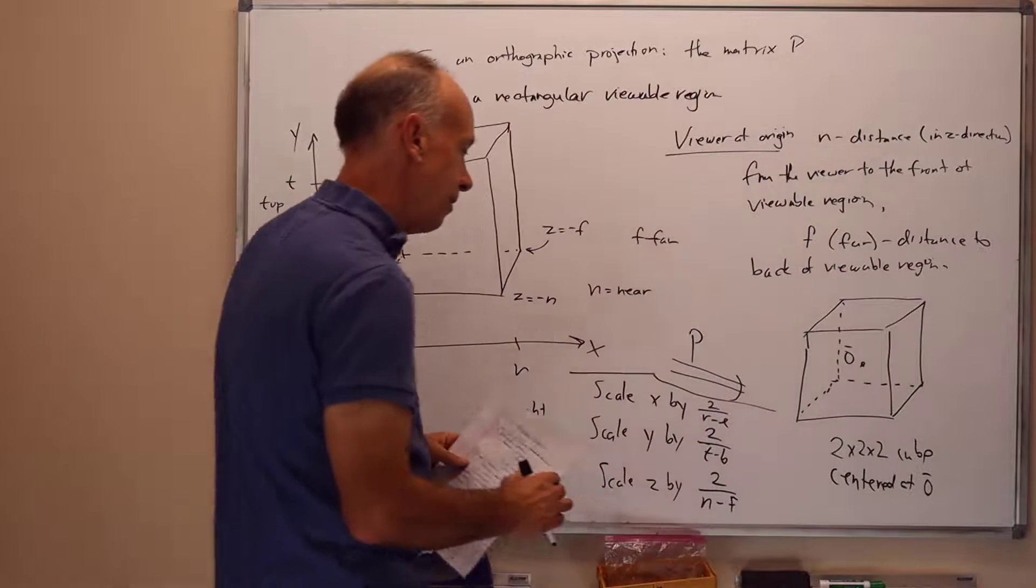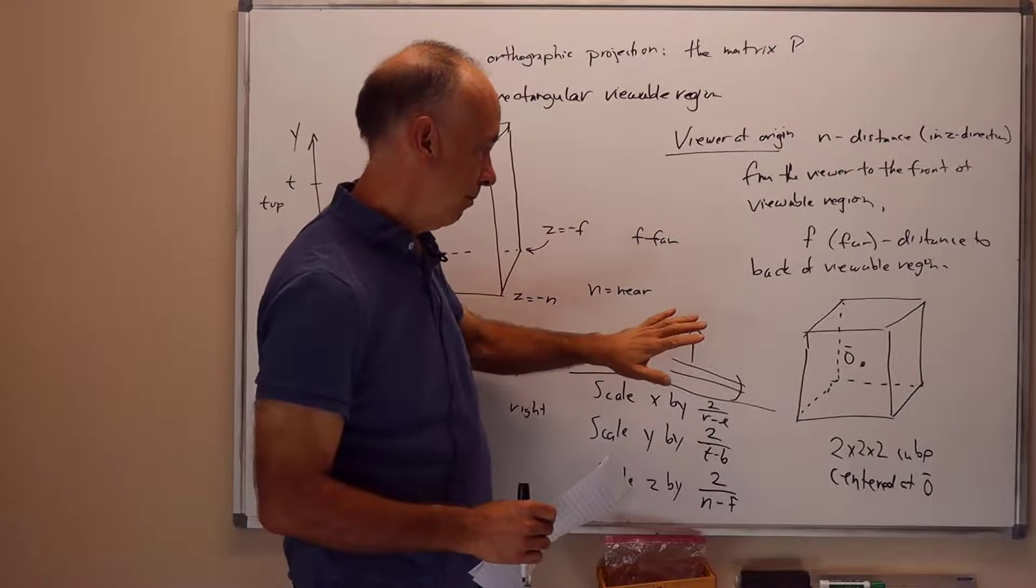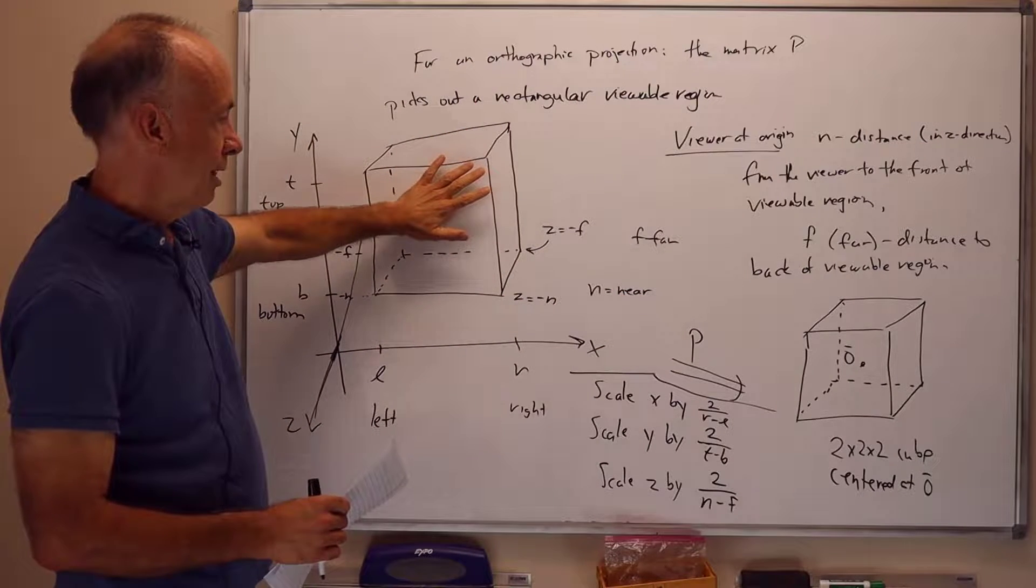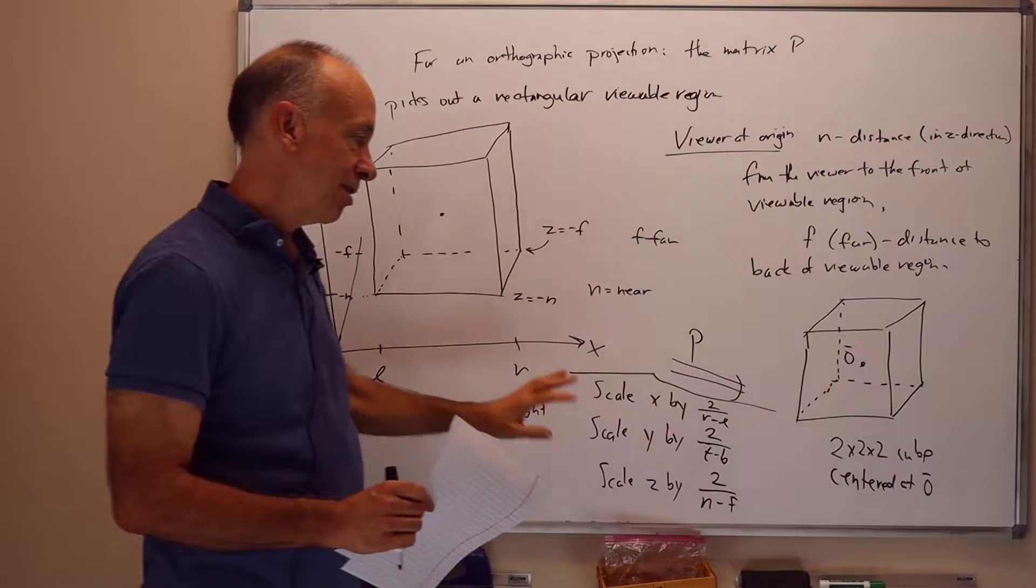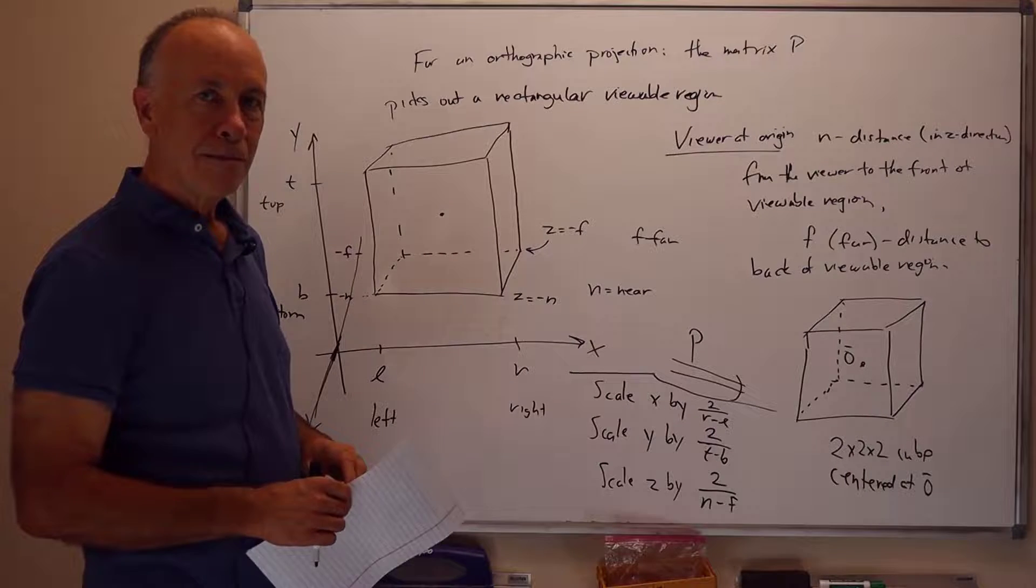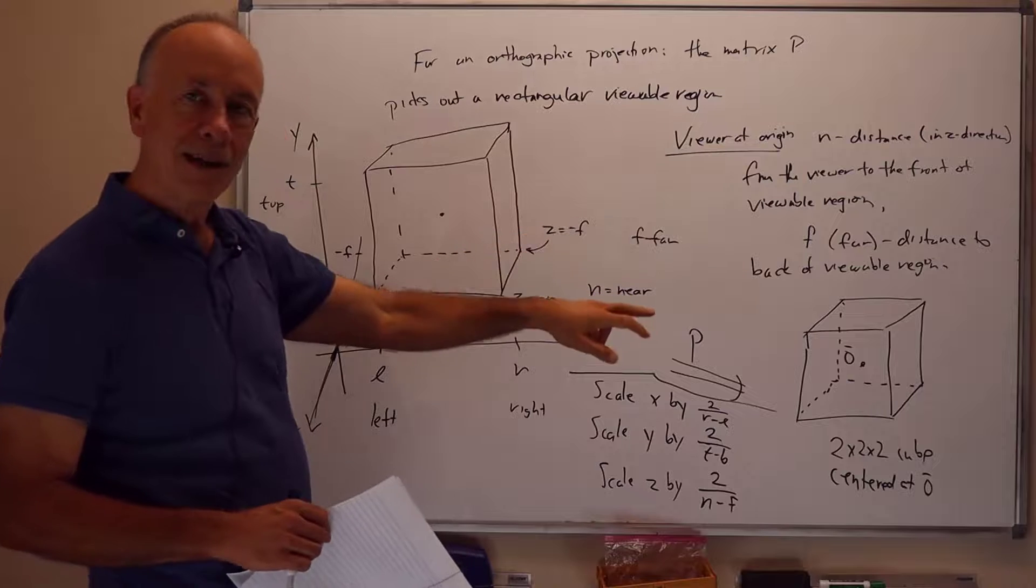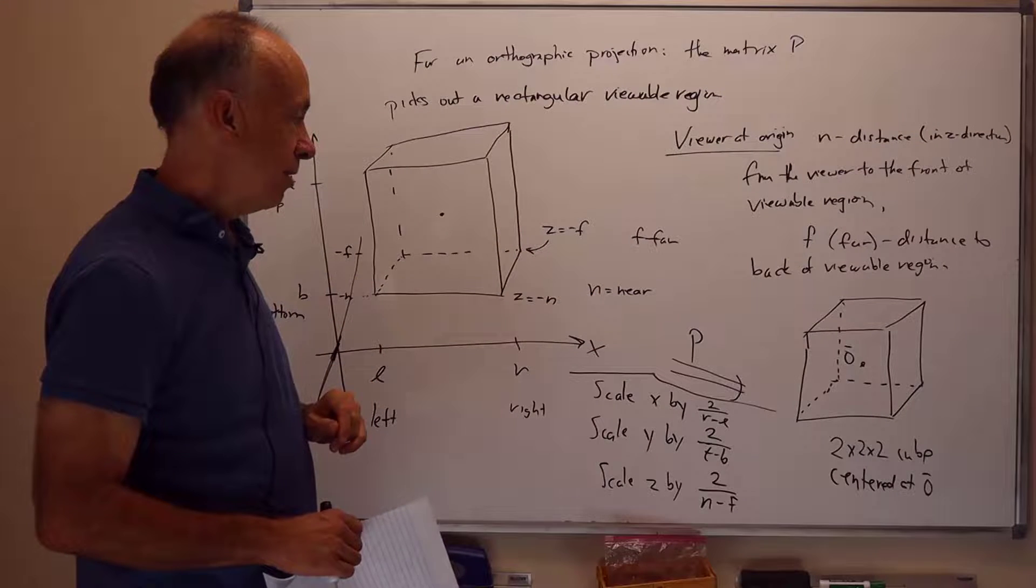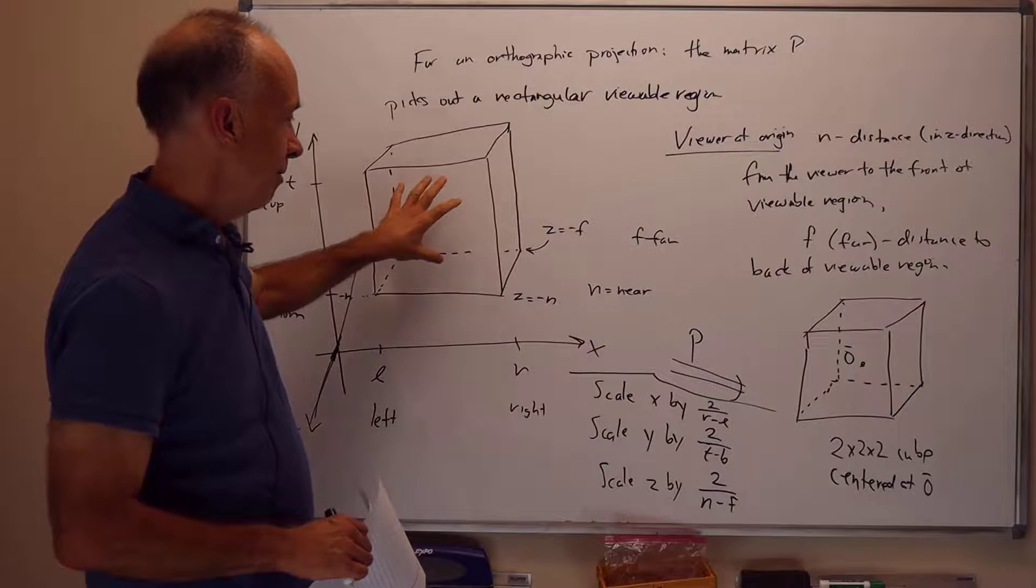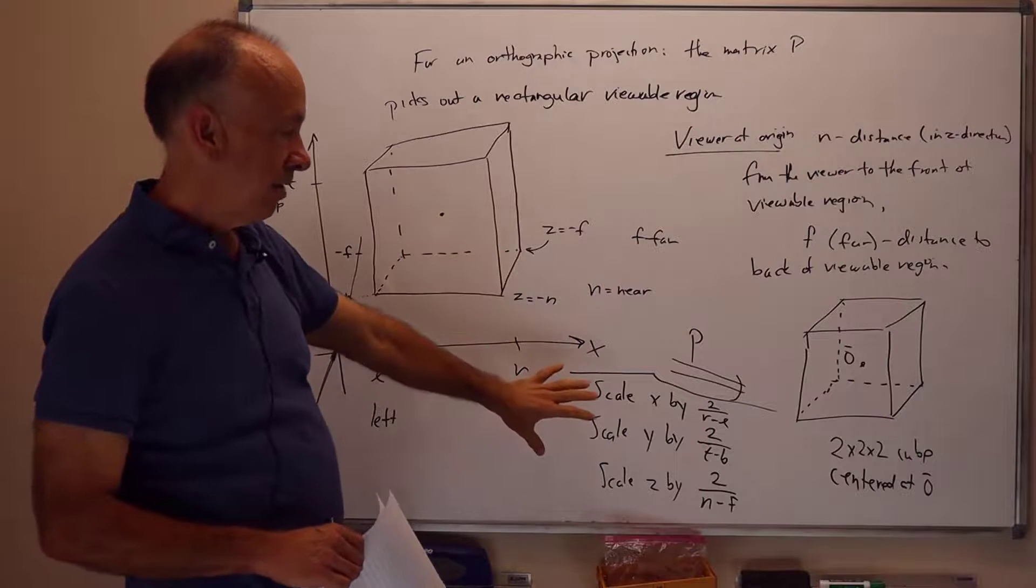And we're going to scale z by the factor 2 over n minus f. And this actually is a negative factor. The point here is that we're scaling, we're taking this cube, the front part is where z equals minus n, and that's going to map to z equals minus 1 over here. The back part is the place where z equals minus f, and that's going to map to z equals 1. So we actually have a negative scaling factor here that flips the cube inside out. It's a little bit unfortunate that OpenGL has this convention, but it's done and we have to live with it. And then we also have to do a translation amount to get the center of this cube to here.